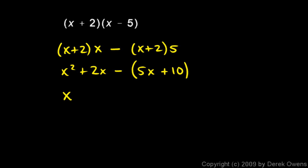So this becomes x squared plus 2x minus 5x minus 10. And then the plus 2x and the minus 5x can get combined. We still have our x squared, and these two add up to a minus 3x minus 10. And that's our answer.